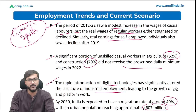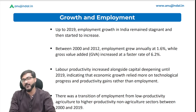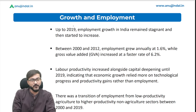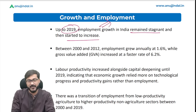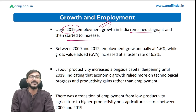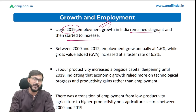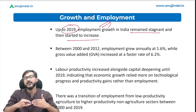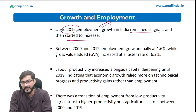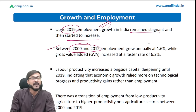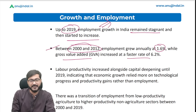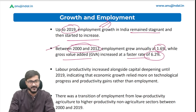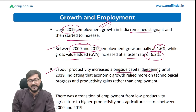The second sub-heading is growth and employment. The report says that up to 2019, employment growth in India remained stagnant, and then started to increase as the government boosted spending post-COVID-19. Between 2000 and 2012, employment grew annually at only 1.6 percent while gross value added increased at a faster rate of 6.2 percent. Labor productivity increased alongside capital deepening until 2019.